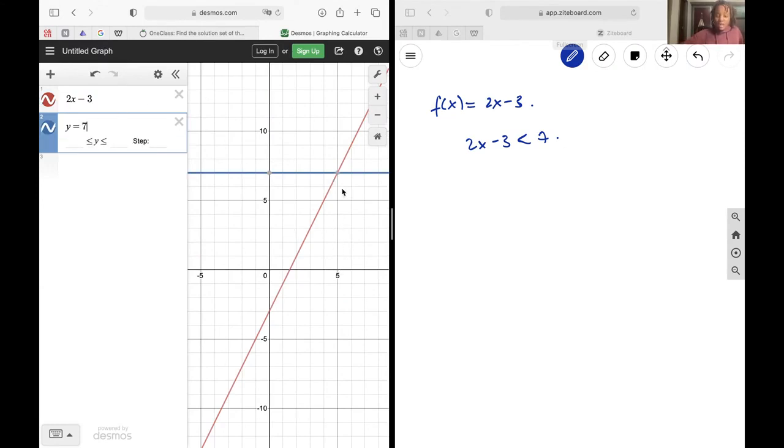I'm asking for the x values that will give me an output less than 7. Already from the graph I can see it's going to be when x is less than 5, but now let's mathematically do it really quickly.